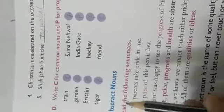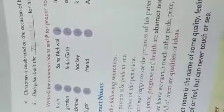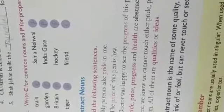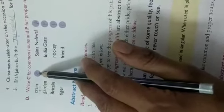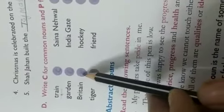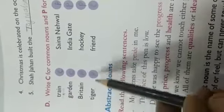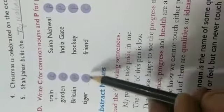Next exercise: write C for common noun, P for proper noun। जहाँ जहाँ आपको common noun दिख रहा है वहाँ box में C लिखना है, जहाँ proper noun दिख रहा है वहाँ P लिखना है। Common मतलब जिसमें किसी व्यक्ति का नाम नहीं हो — जैसे 'train' — train को कोई special नाम नहीं, सिर्फ train — तो common। Garden भी common क्योंकि कोई particular नाम नहीं। Britain जो है वो country का नाम है — तो Britain proper noun। Tiger भी animals में आता है लेकिन यदि एक special tiger का नाम लिया है तो proper noun।